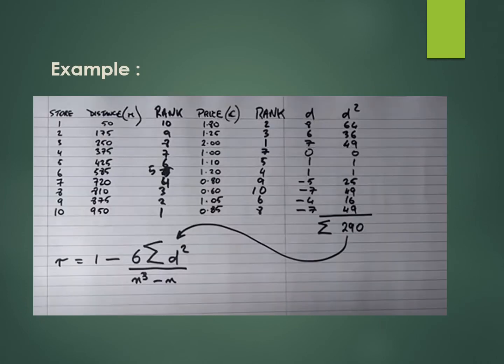In this example, 10 stores and their respective distances and pricing of an item are taken as the two variables. Ranks are assigned in decreasing order — rank 1 for the highest value (950 for distance, 2 for price) up to rank 10 for the lowest value. The differences of both ranks are calculated (e.g., 10 minus 2 equals 8), then squared. The summation of d squared comes out to be 290 with n equals 10, and the final value falls within the range of minus 1 to plus 1.